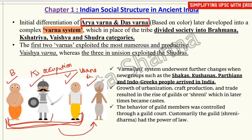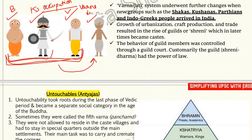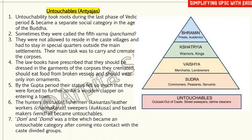With the growth of urbanization and crafts production, the caste system became highly exploitative in nature. The behavior of guild members was controlled through a guild court — the guild, known as 'Shreni,' had the power of law. Through this law, higher-caste groups exploited lower-caste people.